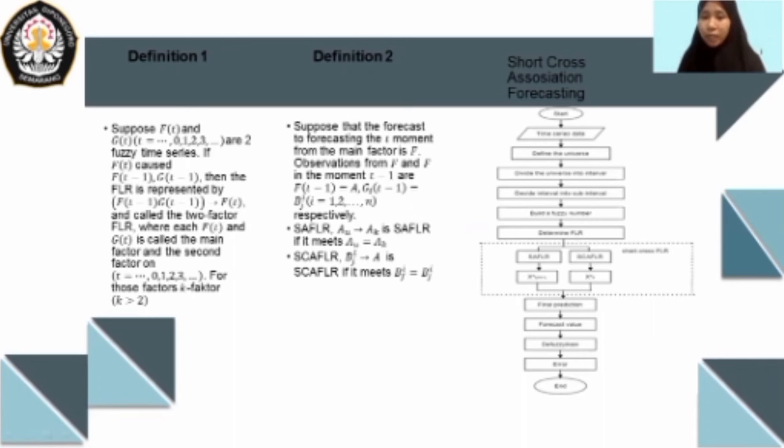We start with the time series data, and then we define the universe. The next step is to divide the universe into intervals, and then we re-divide the intervals into subintervals. From the subintervals, we build a fuzzy number.